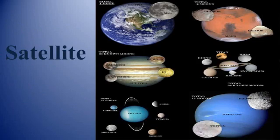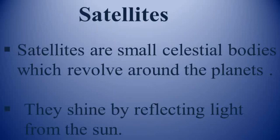Satellite: a satellite or moon is a celestial body that moves around the planets in the same way as the planets move around the sun. All planets except Mercury and Venus have satellites. Our Earth has only one satellite, and the number of moons for each planet varies. There are about 100 known satellites in the solar system. Satellites are small celestial bodies which revolve around the planets. Satellites do not have their own light — they shine by reflecting light from the sun.